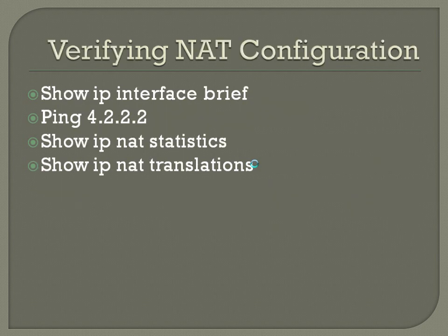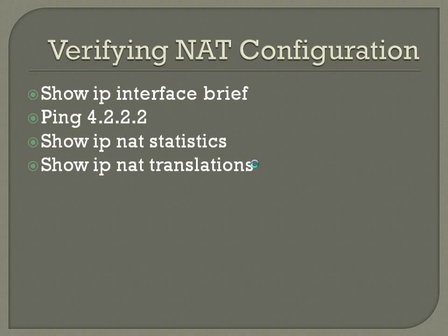Verifying NAT configuration: use 'show ip interface brief' to get familiar with your interfaces, their up status, and so on. You can ping a public address like 4.2.2.2 from both the private side and the public side. You can also use 'show ip nat statistics' and 'show ip nat translations' to see what traffic is getting translated, what IPs those are mapping to, and more granular NAT details.